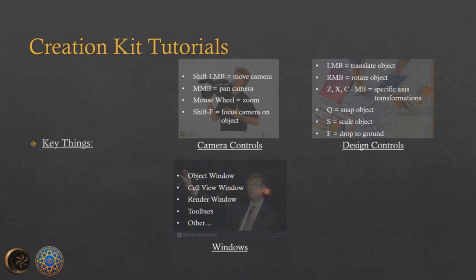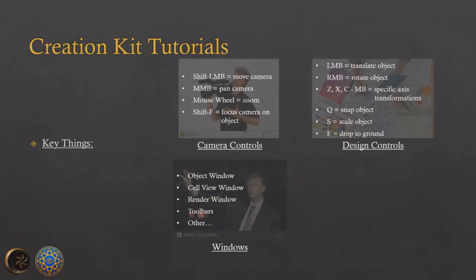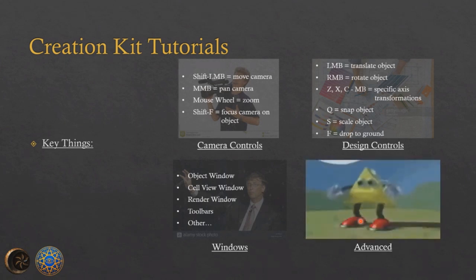The Cell View Window lets you look through all your cells — interior cells, and you can open world spaces from the same window. The Render Window is the big one — 99% of Creation Kit work happens there; that's your design space and what you'll see in game. You also want to remember your toolbars: there's the main toolbar at the top, and others for navmesh, inventory, and actor-related tools.